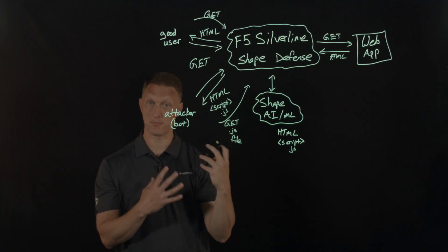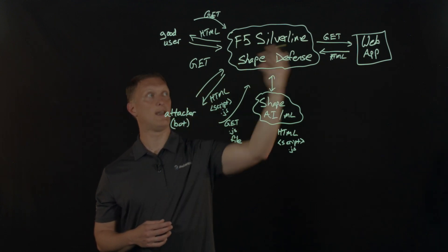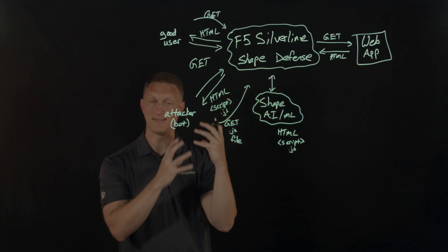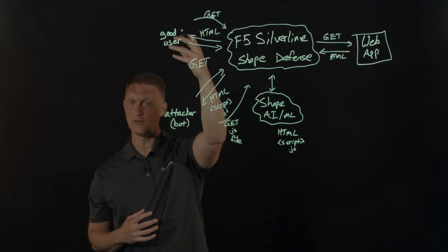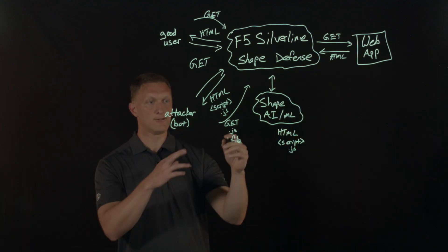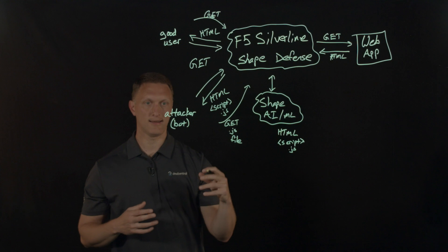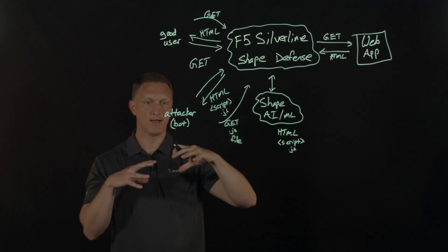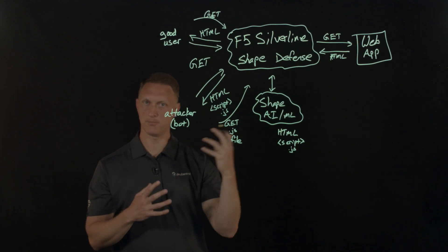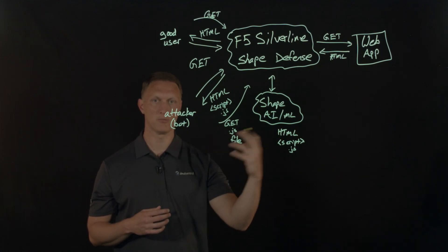Very specific proprietary telemetry data about the actual end user and device trying to access your web application comes into play. Silverline Shape Defense is able to detect at that point if the end user is a legitimate human user or an attacker bot. In addition, Silverline Shape Defense applies a body of knowledge — having been in this business for many years — to understand what is supposed to happen in normal network transactions and traffic flows.